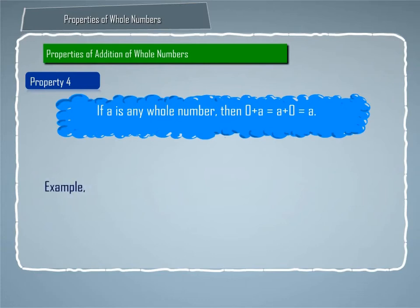For example, 0 plus 8 is equal to 8 and 8 plus 0 is also equal to 8.